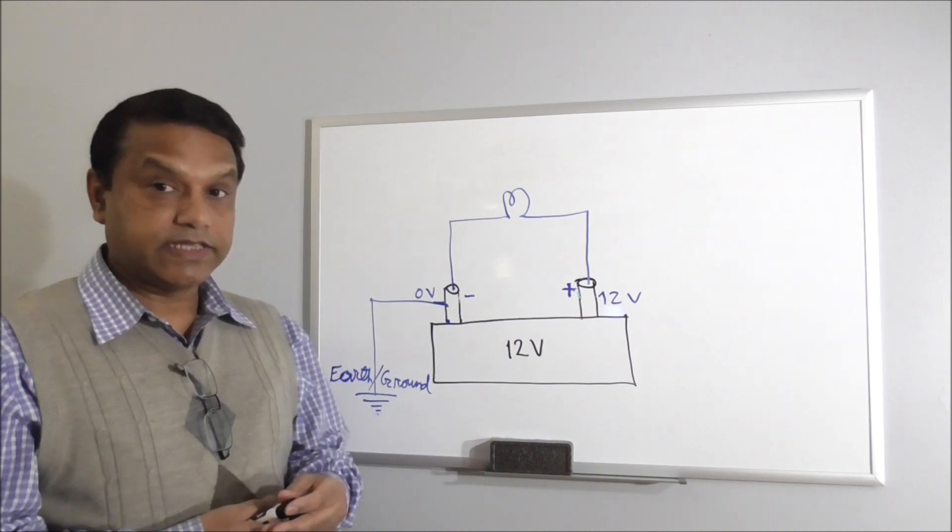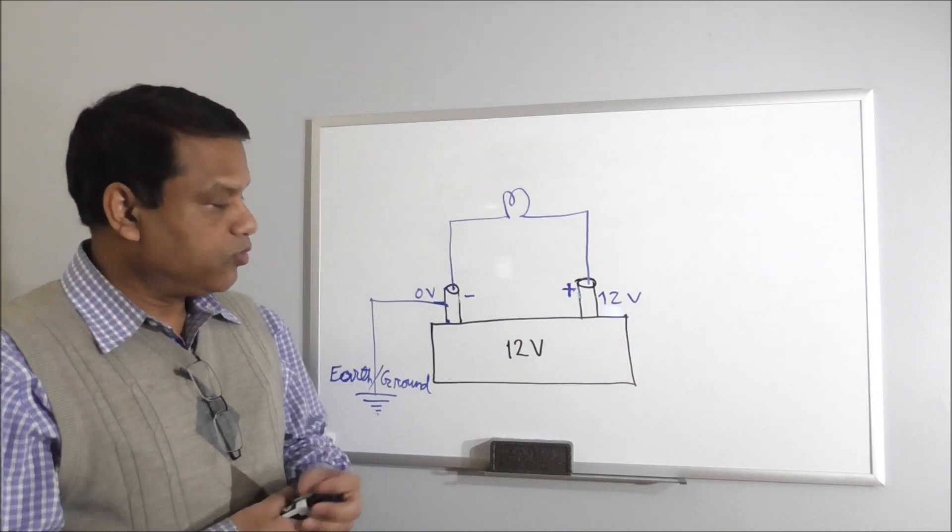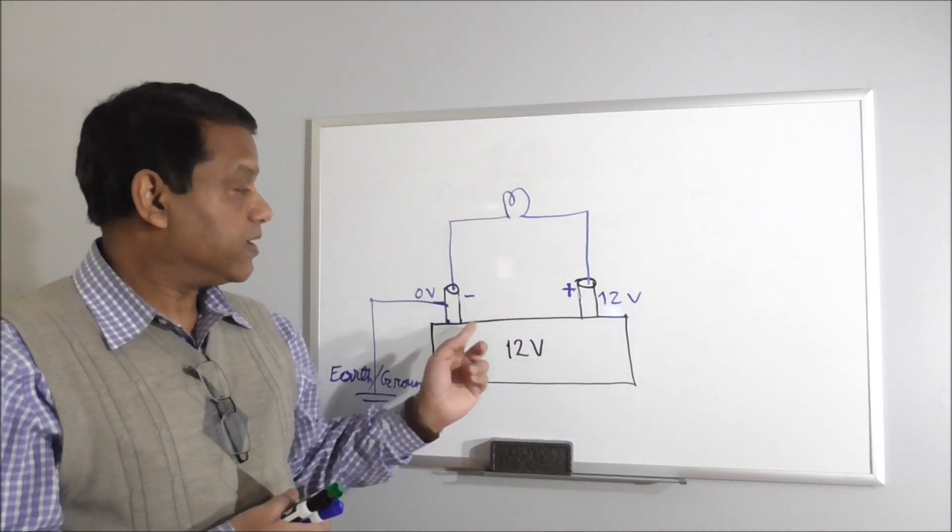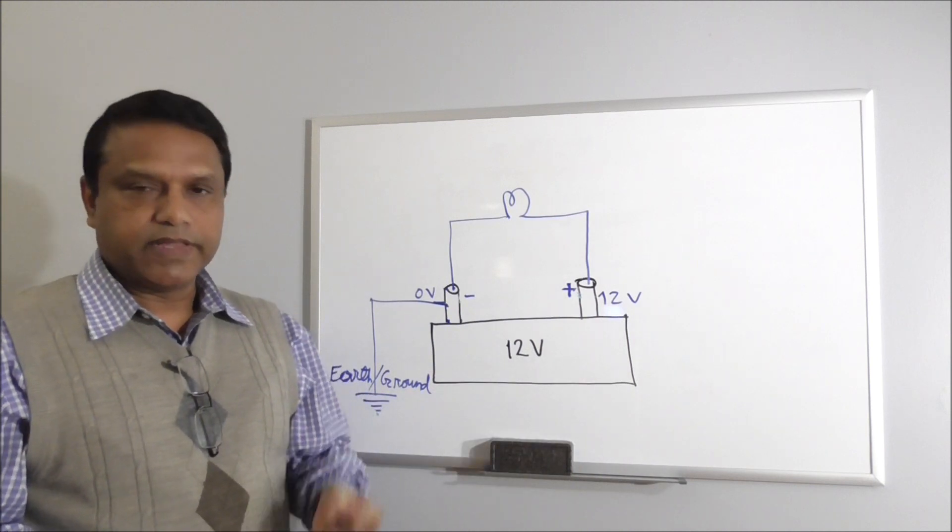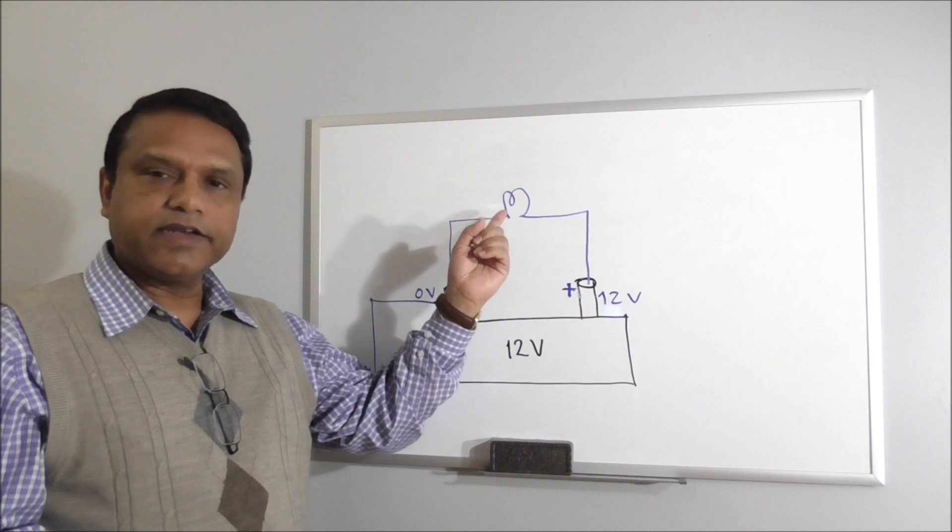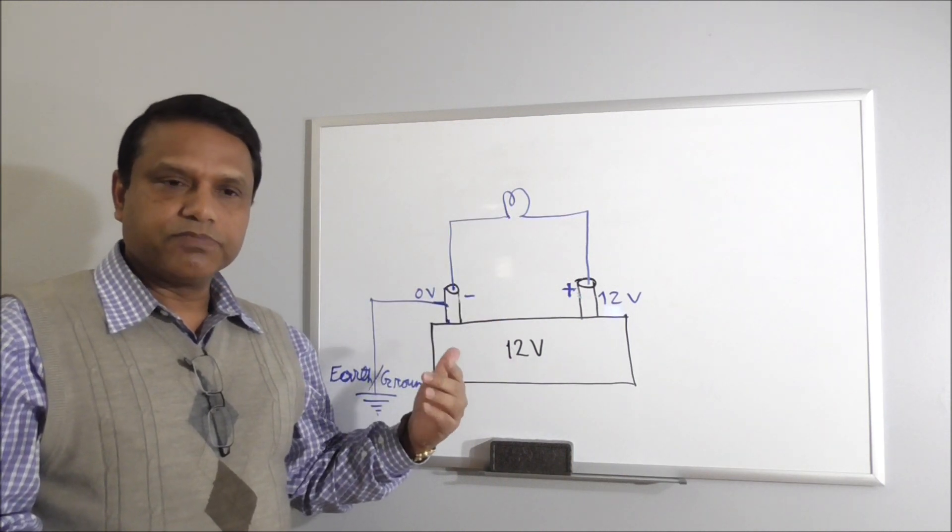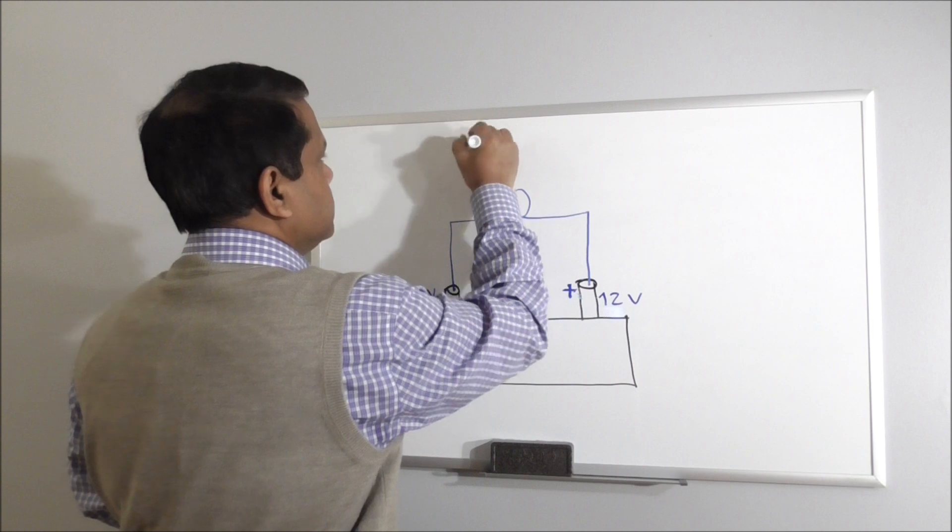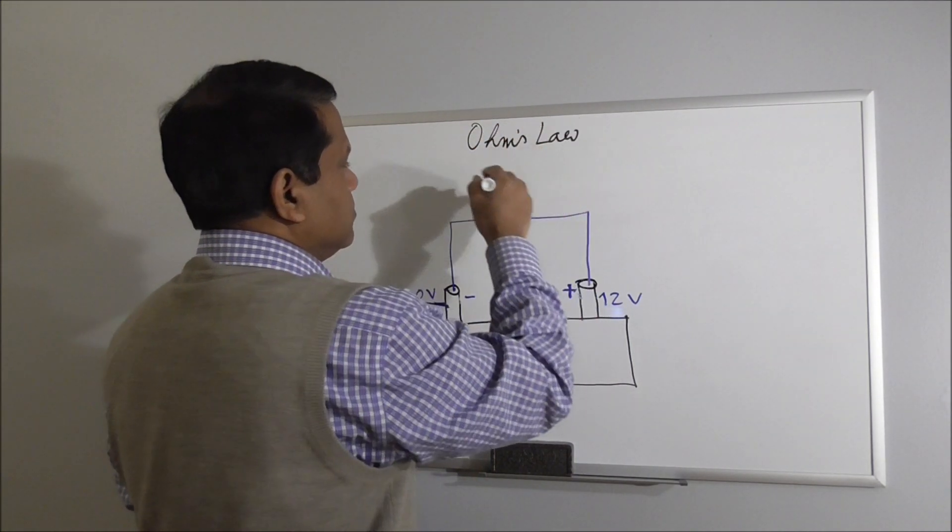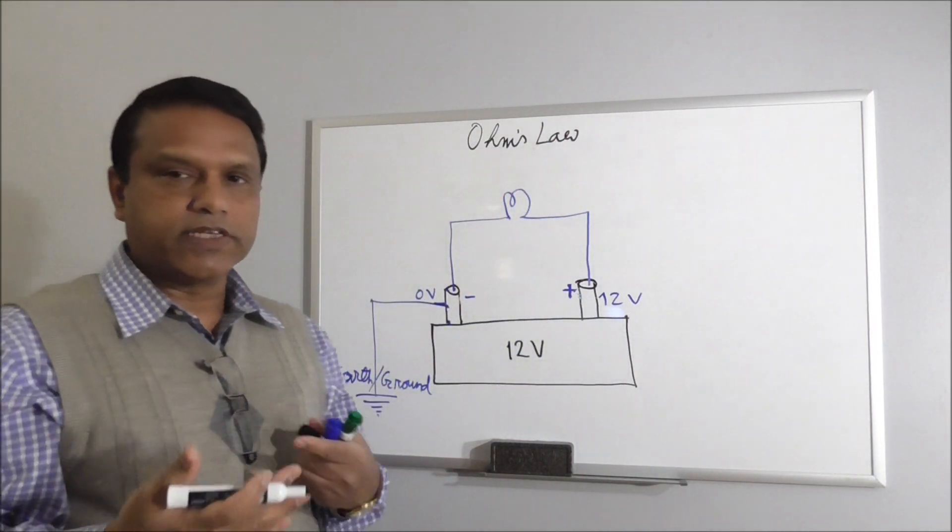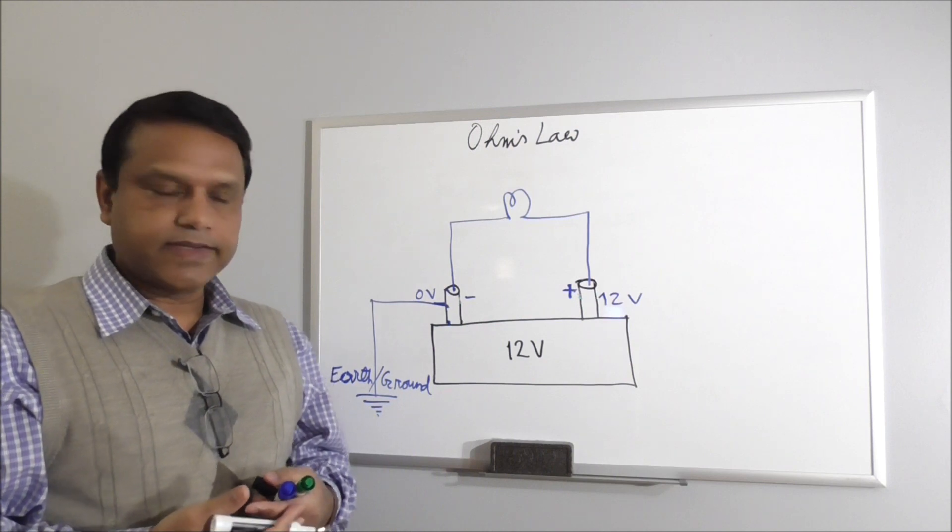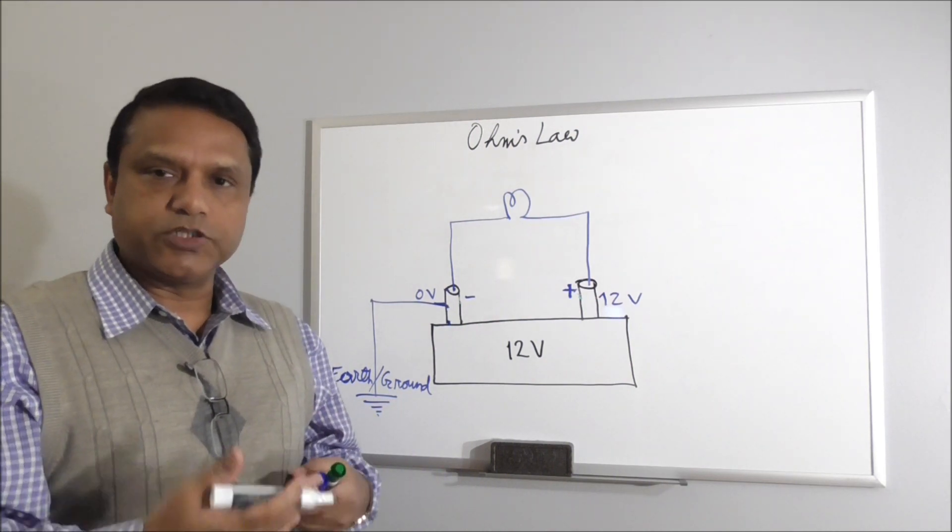So the third topic is Ohm's Law. Ohm's Law is pretty simple. It says the more voltage you apply, if the resistance is same, you need to have more current. But the essence of Ohm's Law is this current increase with more voltage is proportional. So this law gives us the relation between voltage and current. If we apply certain voltage, how much current you should get? And if we increase the voltage, how the current should increase?